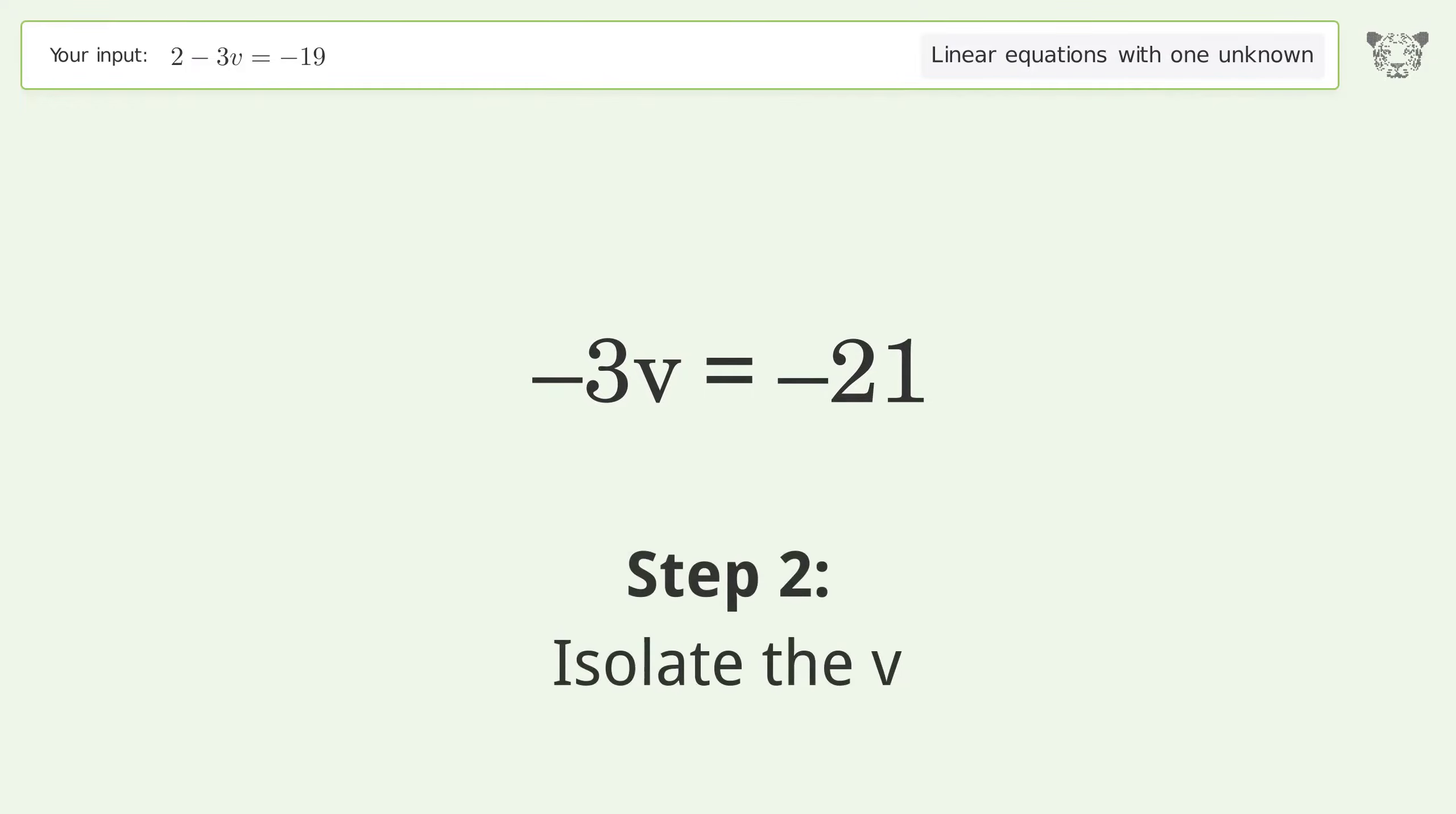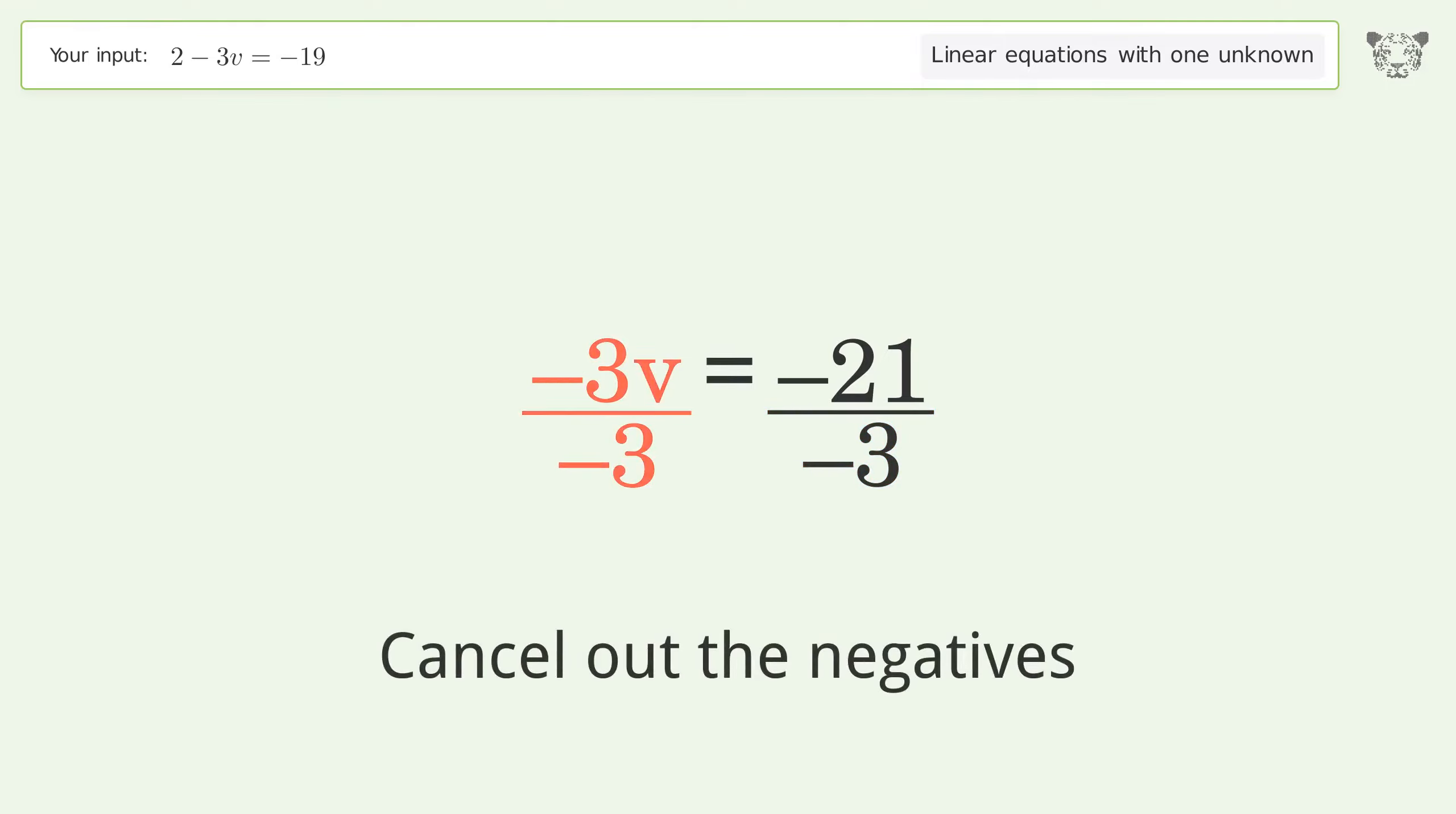Isolate the v. Divide both sides by negative 3. Cancel out the negatives. Simplify the fraction.